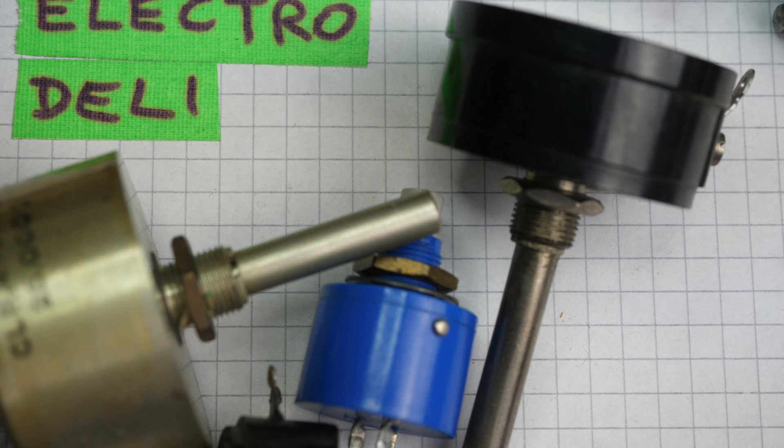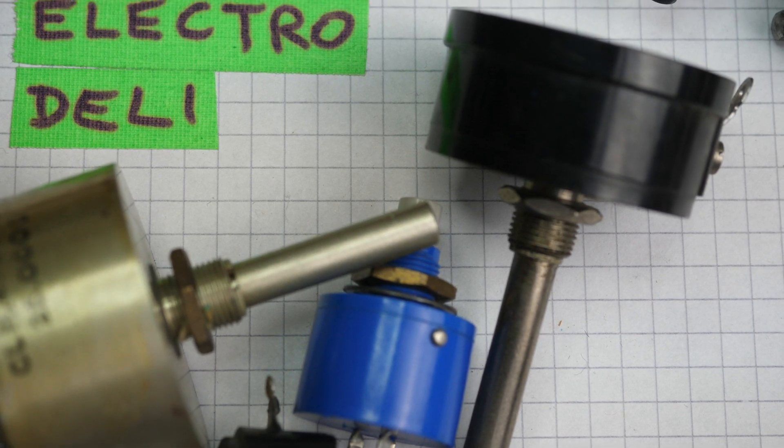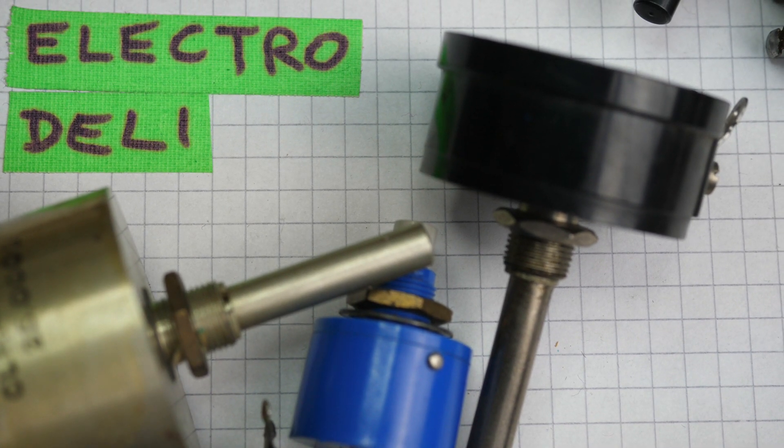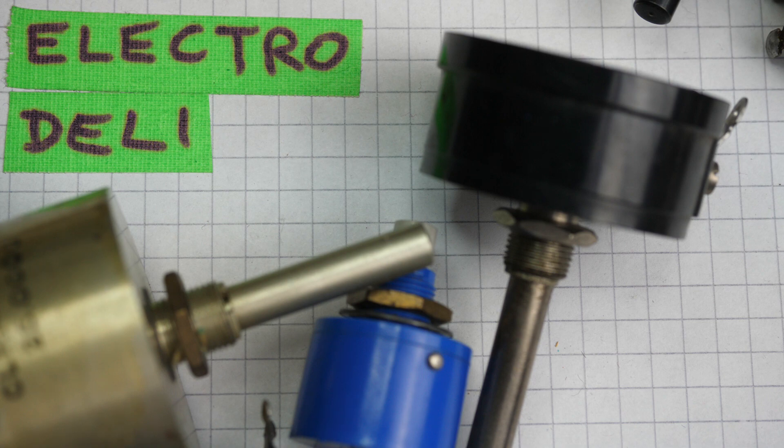So today on Electro-Delhi we're going to have a look at some components which are a little bit nicer, a little bit more expensive than your usual component, and this time it's going to be the Variable Resistor or Potentiometer, commonly known as a pot. I've got some hopefully interesting pots here which are a little bit more expensive, more stylish, more precisely made than your average pot which you might see on a piece of modern equipment.